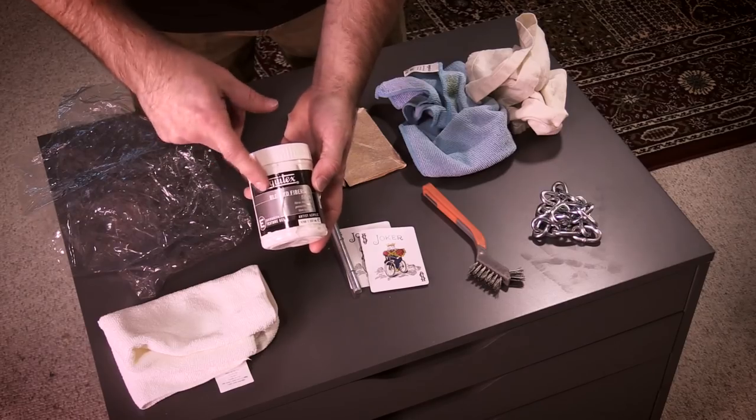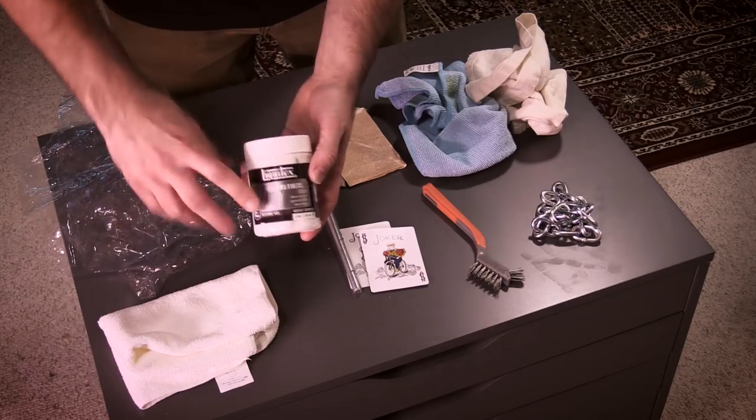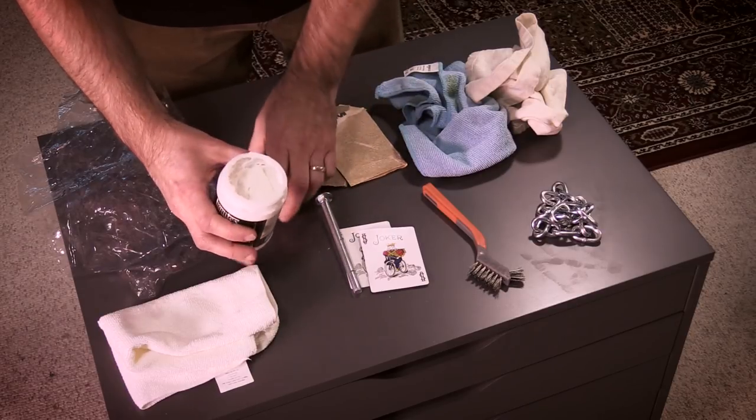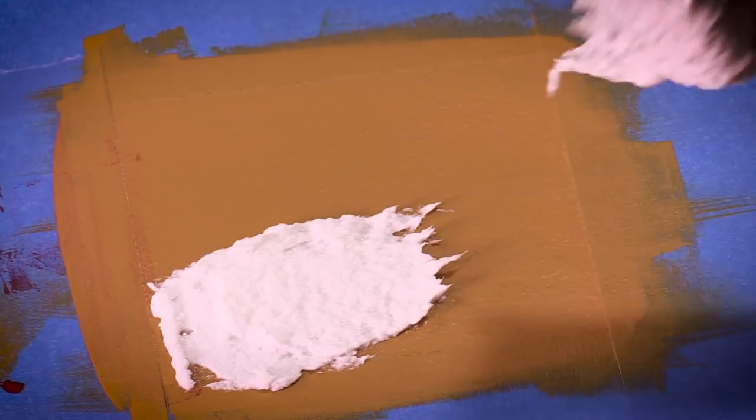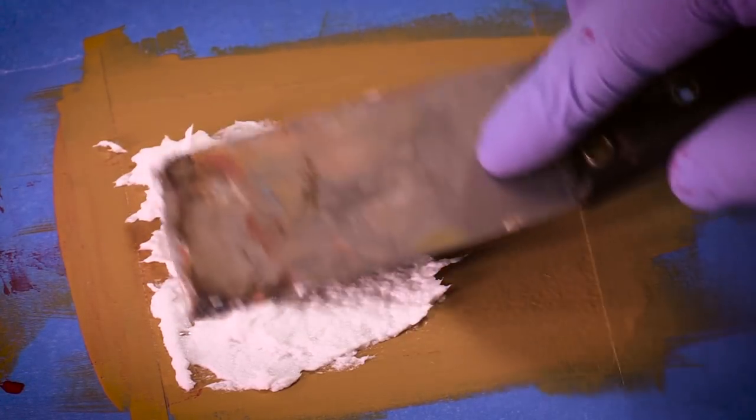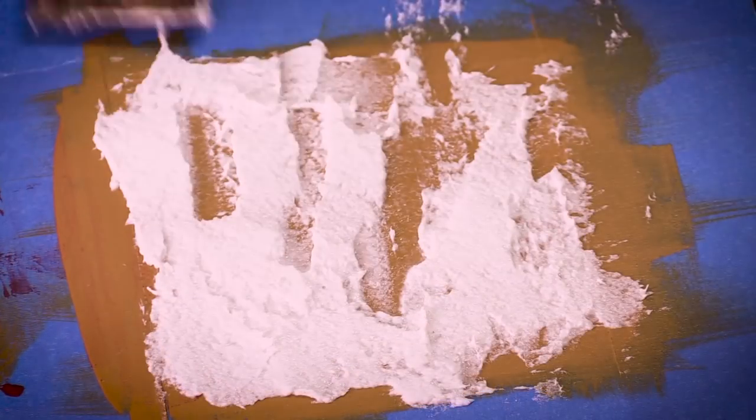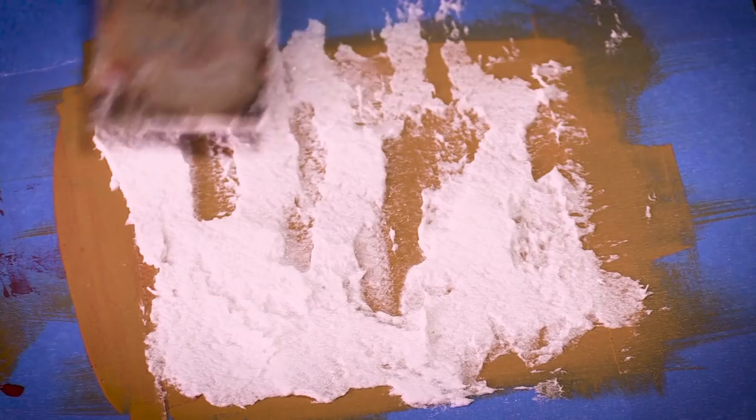Another product I use here is Blended Fibers by Liquitex. This stuff is really nice. You apply this to your painting surface first and you have to let it dry, but you can mold all kinds of different shapes and you can carve into this material. It's a very versatile material that you can use for applying textures onto your paintings and then you can paint on top of these Blended Fibers.